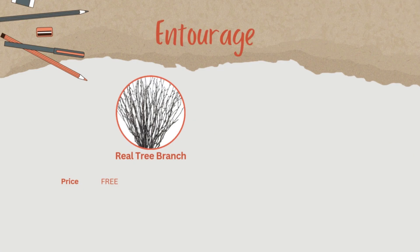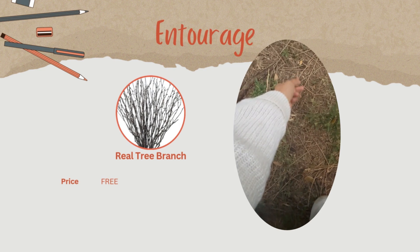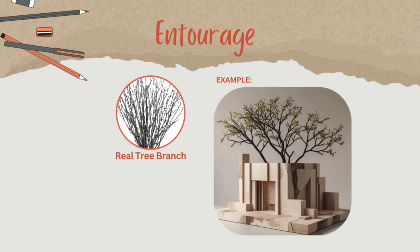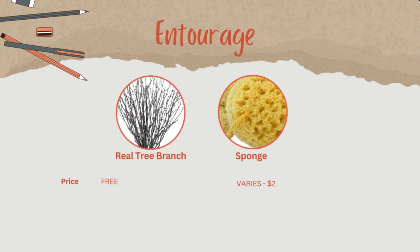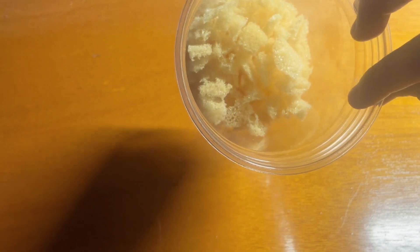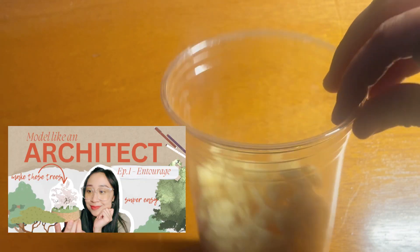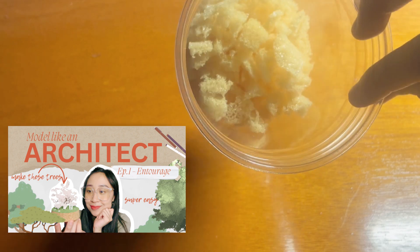Next is entourage. You can visit a park and collect twigs or branches — just bring a buddy because it's safer and you won't look too suspicious. These are great to represent realistic trees. Number two: sponges. You can do it yourself with your own foliage. It takes time but looks fantastic in monochrome models, adding depth and character to your presentation. Check out my latest video on creating sponge trees with wire.